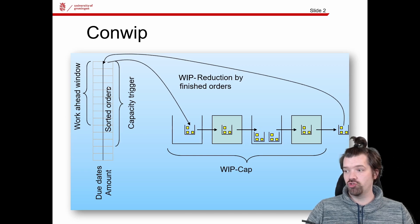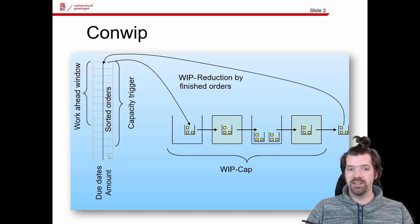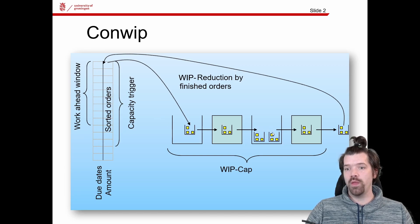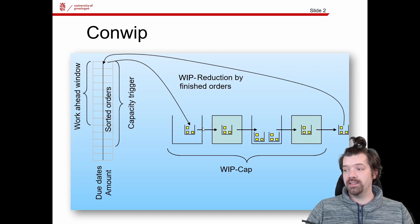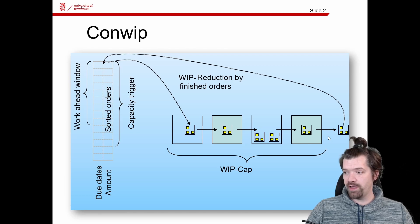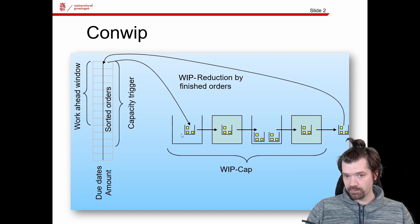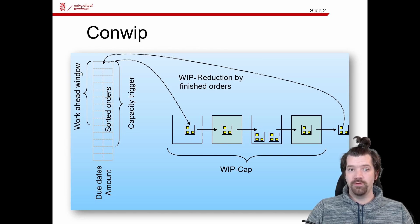It could be possible that the fourth order has just one item, which would fit within the WIP cap, but it would violate the priority of the list. So we have to wait until one of the current orders finishes, reducing the WIP. For example, when the first order finishes, the WIP becomes five, and then we can release the third order with five items without violating the WIP cap.